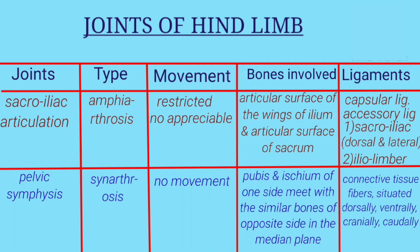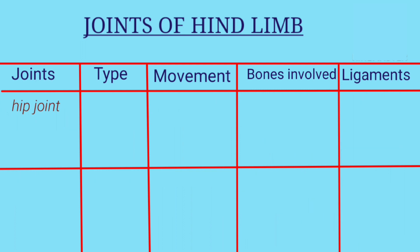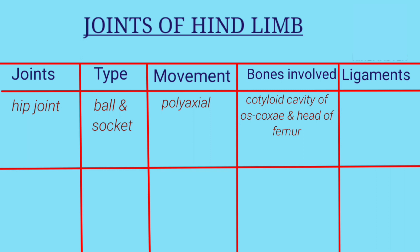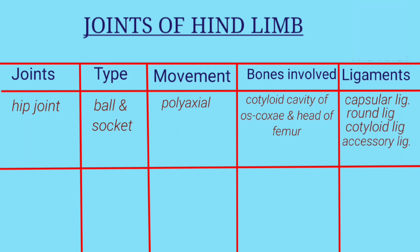Third is hip joint. The type of joint is ball and socket joint and movement is polyaxial. Bones involved are the cotyloid cavity of os coxae and head of the femur. Ligaments are capsular ligament, round ligament, cotyloid ligament, and accessory ligament — one pair in horse.